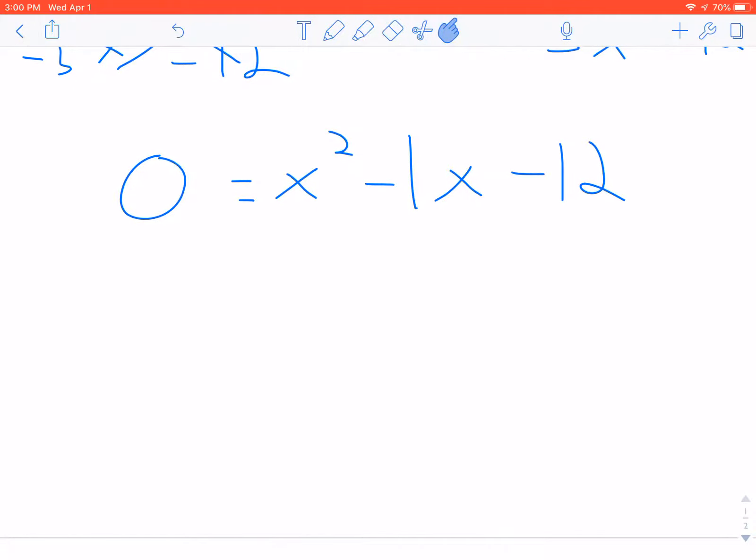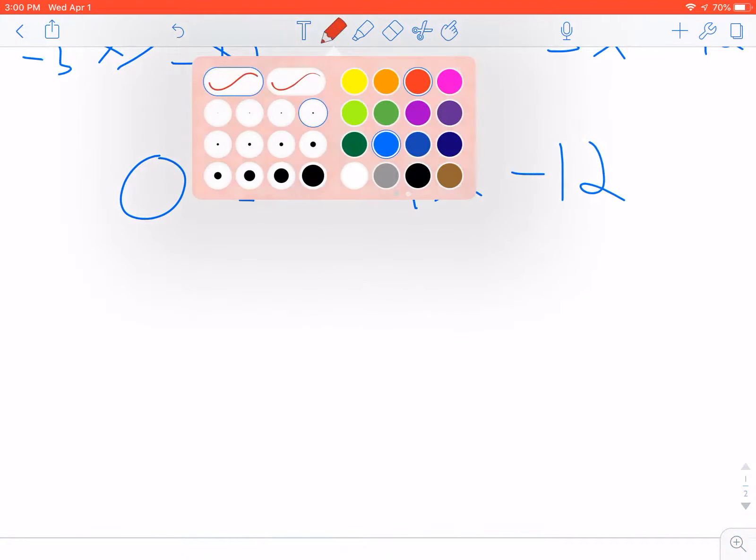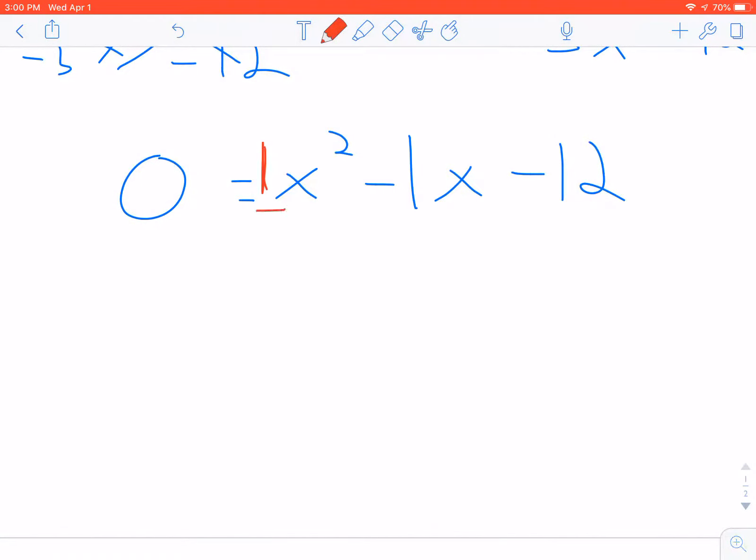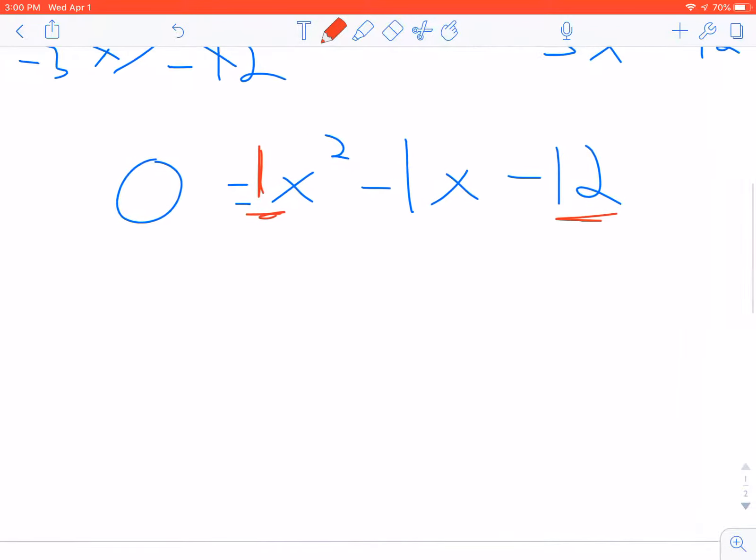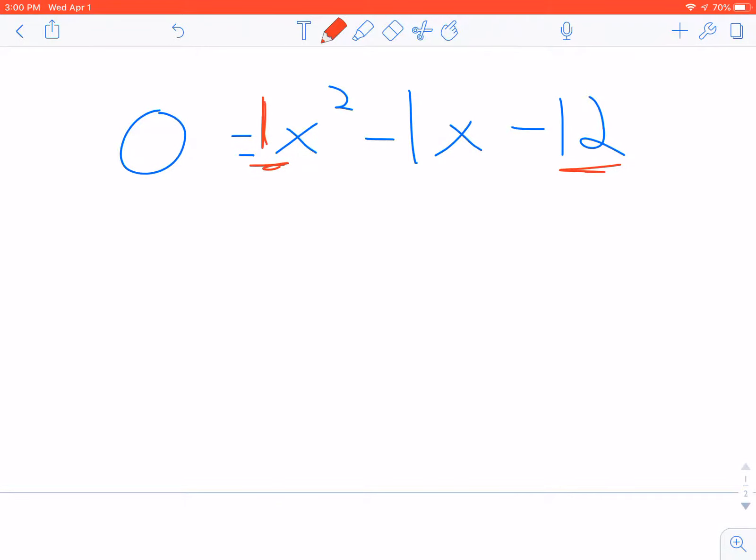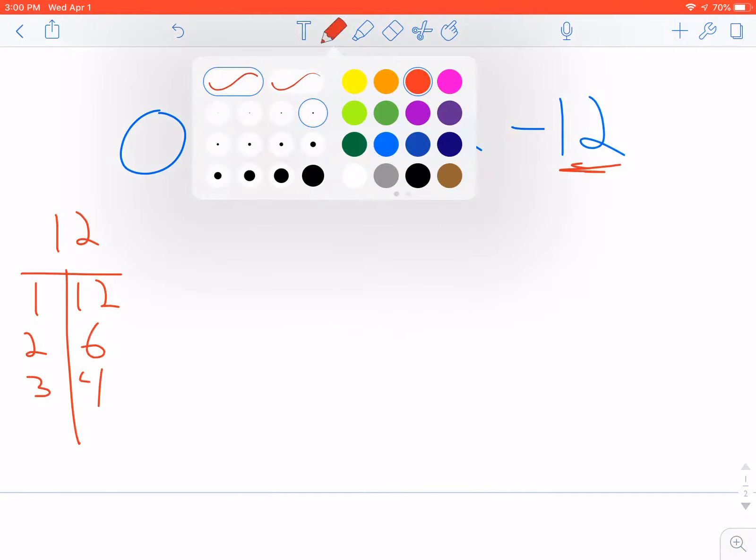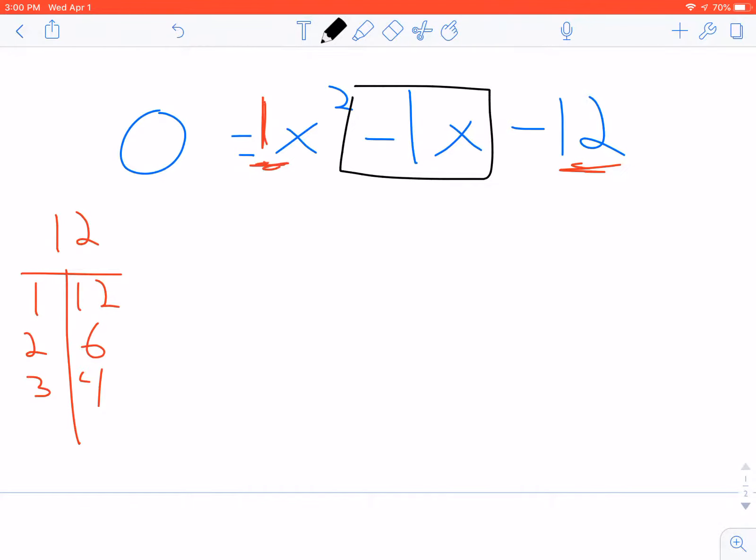So this is an algebra one question at this point. We want to do our AC grouping. Our a term is 1, our c term is 12, so I want to multiply 1 times 12 and list all the factors of 12. So 1 and 12, 2 and 6, 3 and 4.